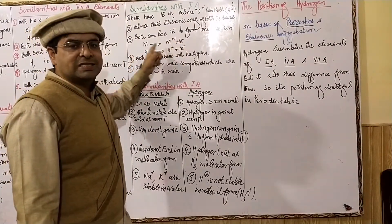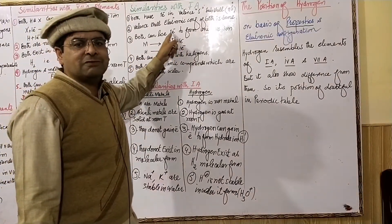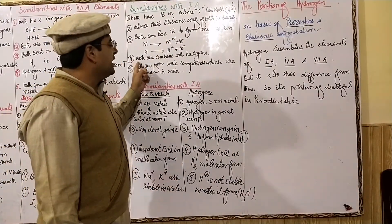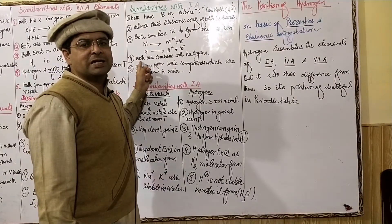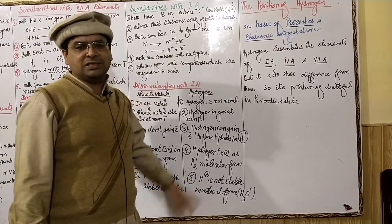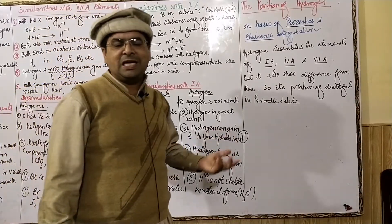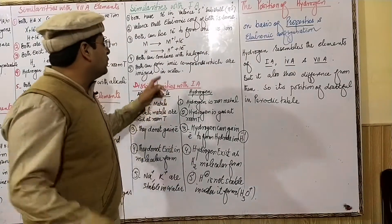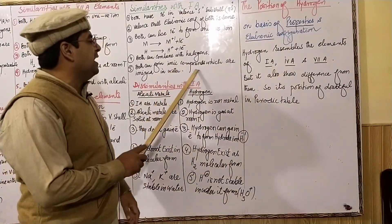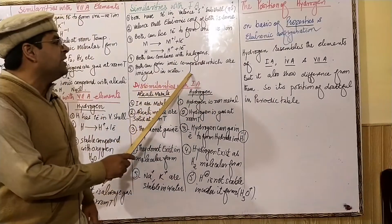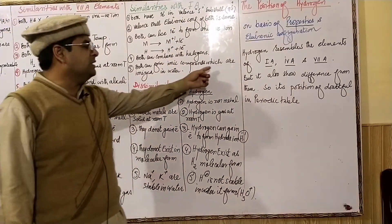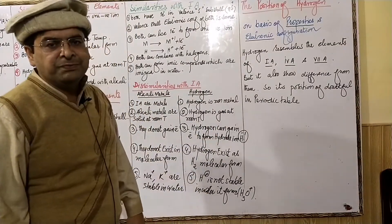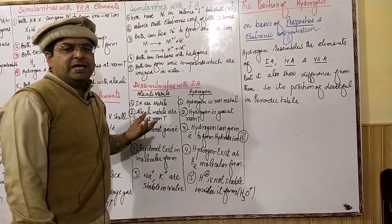Both hydrogen and alkali metals can lose an electron and produce a +1 charge. Hydrogen and alkali metals both combine with halogens to form halides — for example, HCl and NaCl. Both form halides, just as sodium chloride (NaCl) is an example.